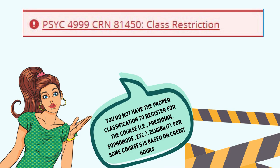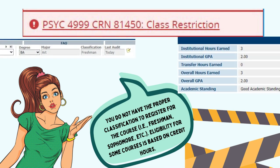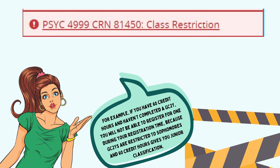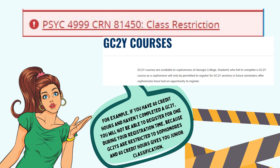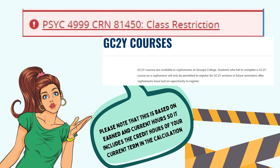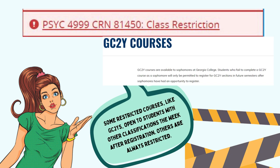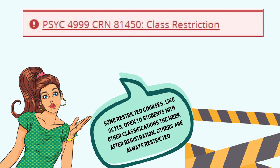This error means that you do not have the proper classification to register for the course, such as freshman, sophomore, etc. Eligibility for some courses is based on credit hours. For example, if you have 60 credit hours and haven't completed a GC2Y, you will not be able to register for one during your registration time, as GC2Ys are restricted to sophomores and 60 credit hours gives you junior classification. Note this is based on earned and current hours, including the credit hours of your current term. Some restricted courses like GC2Ys open to students with other classifications the week after registration; others are always restricted.